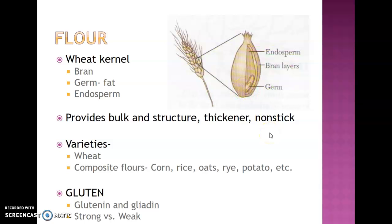Flour provides the bulk and structure of your baked goods. It's also used as a thickener and used as a nonstick agent in coating pans. There are a variety of different flours. You have corn flour that would come from corn, rice flours, oat flour, rye, potato flour.